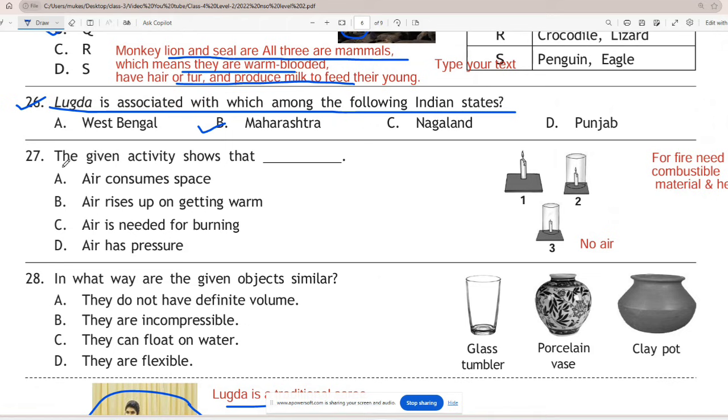Question 27: The given activity shows that - correct answer is C, air is needed for burning. In the given experiment, a candle burns in an open atmosphere. However, when a glass is placed over the candle, it is extinguished due to insufficient air supply.